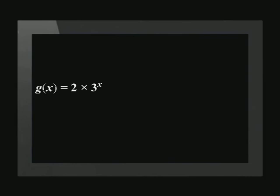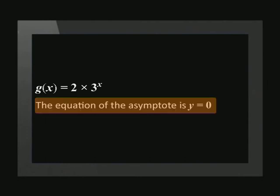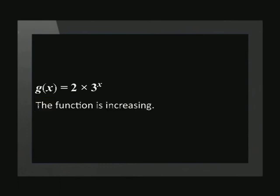Let's see what information we can get by just looking at the equation. g of x equals 2 times 3 to the power of x. This is the equation of an exponential graph because it follows the standard form. The value of a is 2 and therefore the graph lies above the asymptote. The asymptote is defined by y equals q. There is no q in the equation, so the asymptote is y equals 0. The graph is an increasing function as the value of a is positive and the value of b is greater than 1.